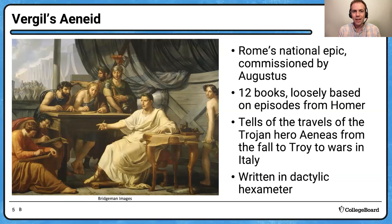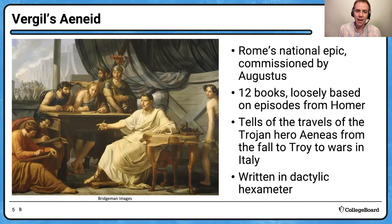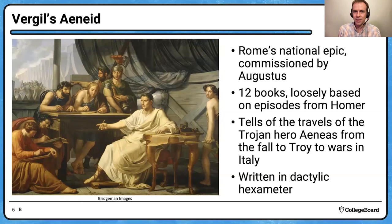The Aeneid is commissioned by Augustus, in a way to promote the glory of Rome, but there's a lot there that isn't just propaganda. Twelve books, loosely based on episodes from Homer's Iliad and Odyssey — you could say it's like fan fiction, but it's more than that. What Virgil does is take episodes from Homer and re-turn them into something unique and his own, fitting a completely different narrative with completely different goals. It focuses on the travels of the Trojan hero Aeneas from the fall of Troy to wars he fights in Italy, establishing his band of Trojan refugees in Italy.